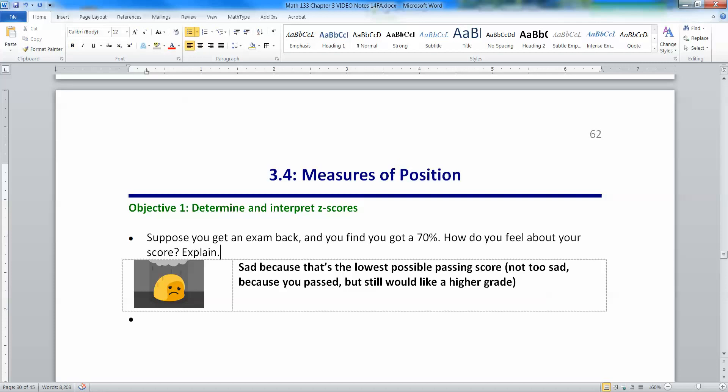Let's do a little thought experiment here. Suppose you get an exam back and you find that you got a 70%. How do you feel about your score? I have here that you feel sad. Thank you to Google Hangouts for my emoticons. Because that's the lowest possible score that's still passing. You're not too sad because you passed, but you'd like a higher grade. This is really dangerously close to not passing. So I have you under the saddy face here.